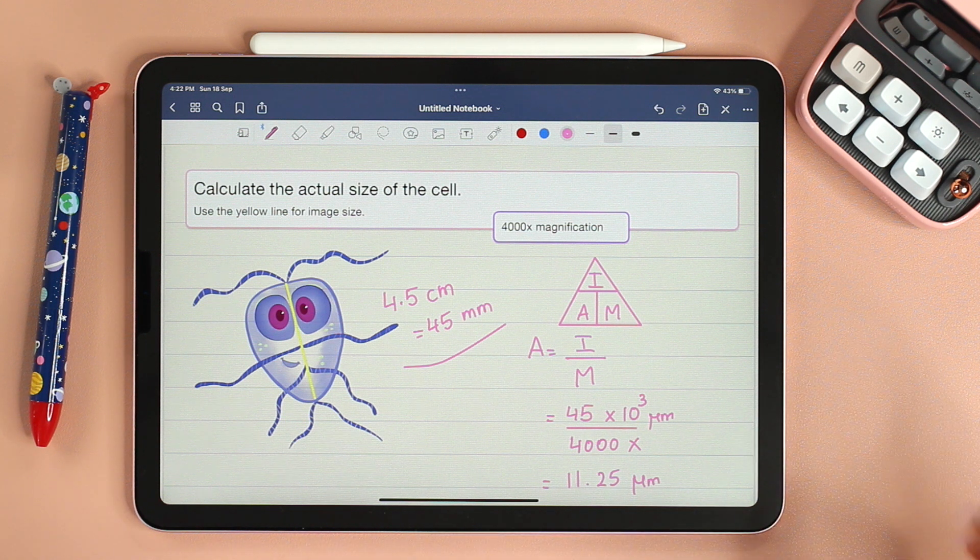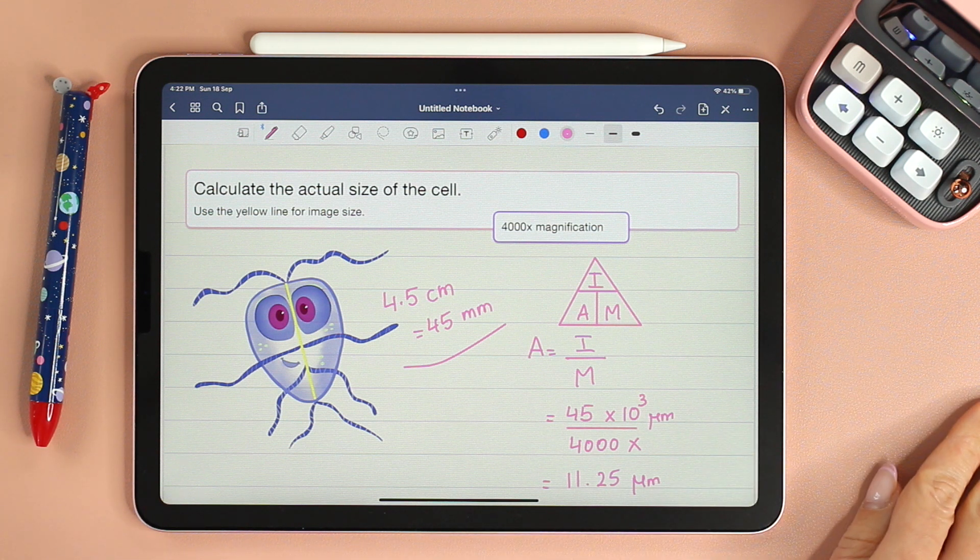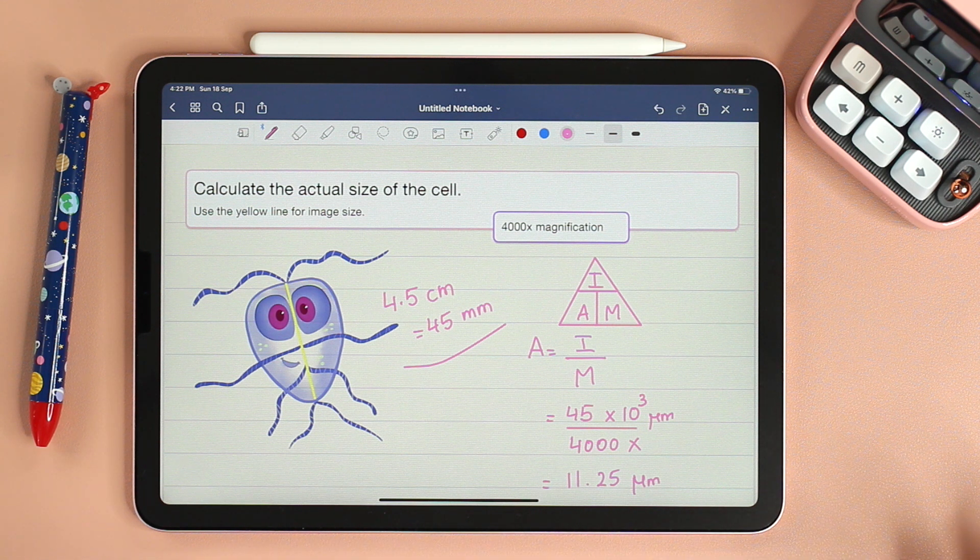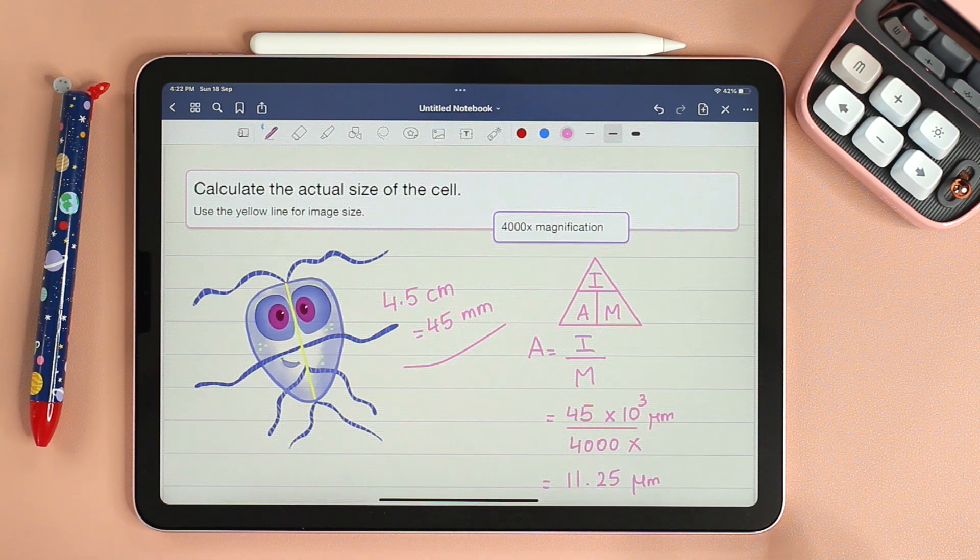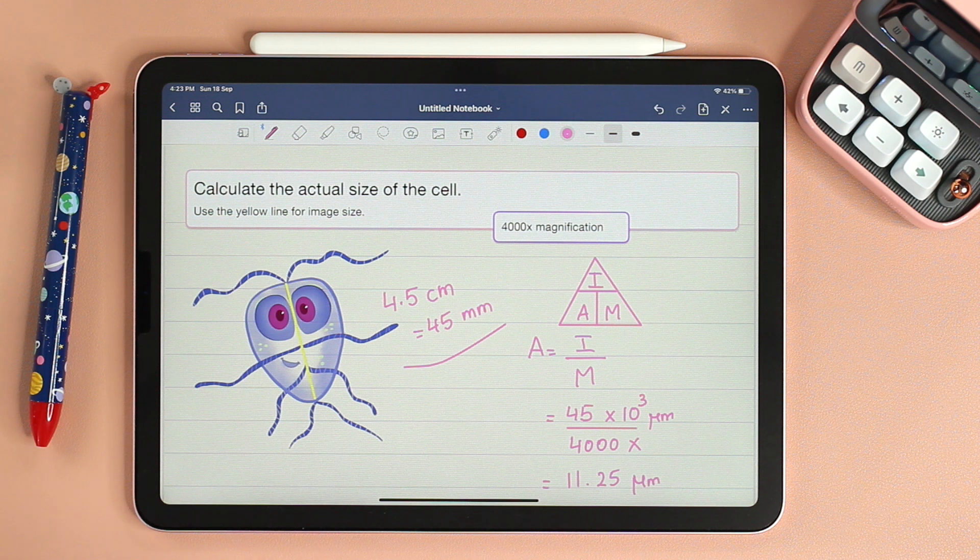And this is it for today's video. I hope you found it easy. Try to practice finding the actual size as well as the magnification. And of course, a quick disclaimer: you will not have sketchy cartoon characters like this. You will have real micrographs where you're going to have either organelles or whole cells, and you will be asked to find the actual size or the magnification. So you guys keep practicing, and I will see you in my next video. Bye!